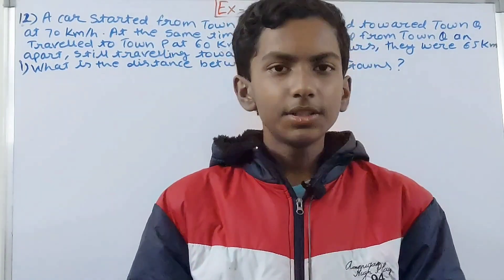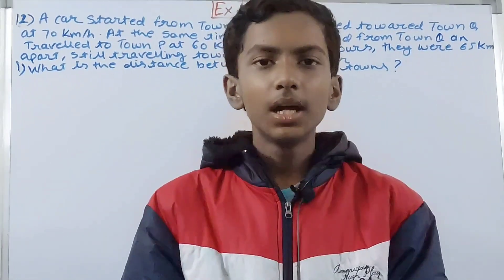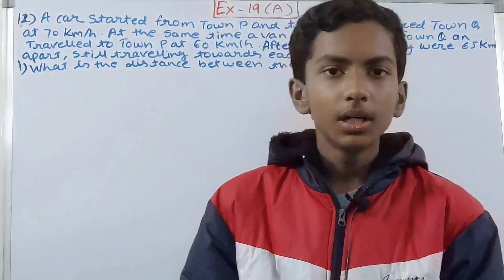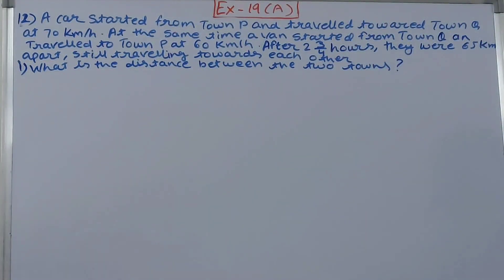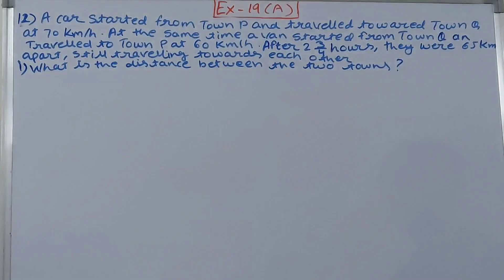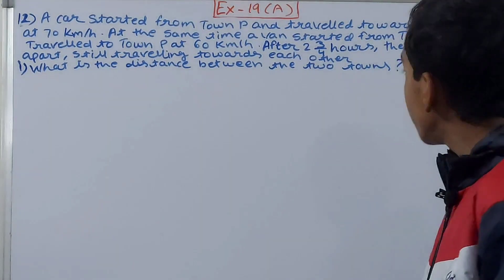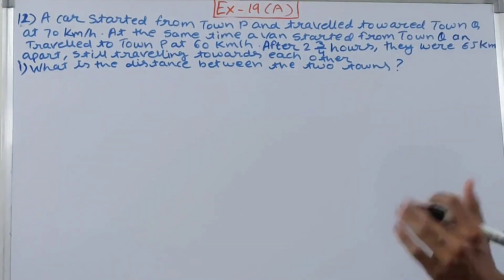We are going to solve ICC Mathematics Class 7th, Chapter 19: Speed, Time and Distance, Exercise 19A, Question 12. A car started from town P and traveled towards town Q at 70 kilometers per hour. At the same time, a van started from town Q and traveled to town P at 60 kilometers per hour. After 2¾ hours, they were 65 kilometers apart, still traveling towards each other.